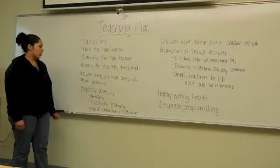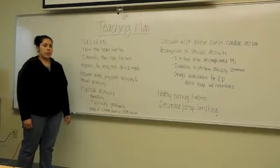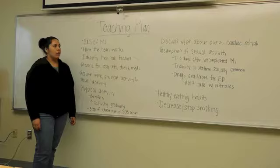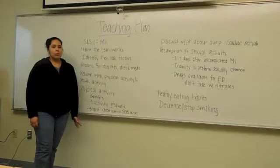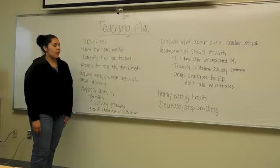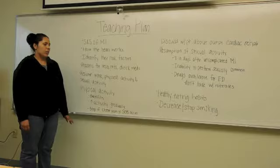So, for physical activity, you want to tell them the benefits. Also, to increase their activity gradually. Stop if chest pain or shortness of breath occurs. You also want to discuss with the patient about outpatient cardiac rehab. For resumption of sexual activity, usually tell them that 7 to 10 days after an uncomplicated MI. The inability to perform sexually is common, but it should resolve over several attempts. Also, the drugs available for erectile dysfunction, and don't take them with nitrates because it can cause severe hypotension and even death. Also, you want to give them information about healthy eating habits and ways they can decrease or stop smoking.